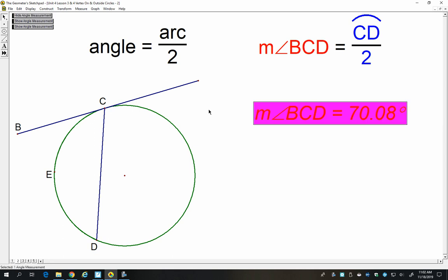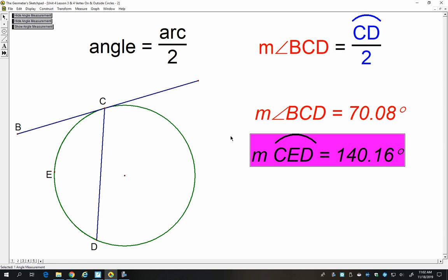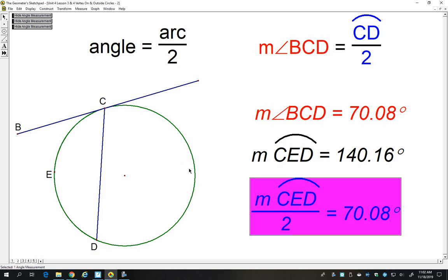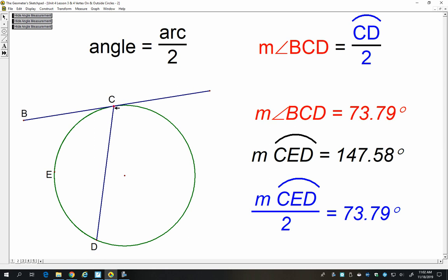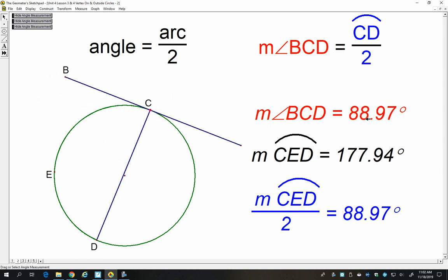So let's measure angle BCD. We'll measure arc CD. Again, I had to throw that third letter in there. And now let's divide the arc by two. And you can see, again, the angle and the arc are equal.